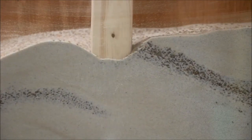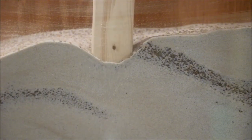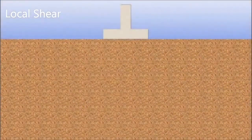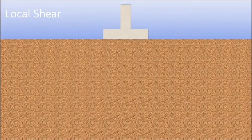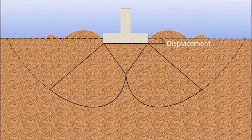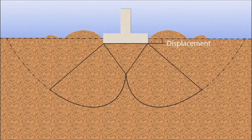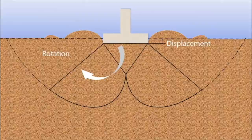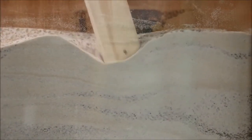Local shear failure occurs in cohesionless and loose to medium dense soils. This failure mode has a well-defined shear surface directly under the footing which may or may not be seen at the surface. Local shear failure happens gradually as the footing continues to experience settlement and the movement along the shear plane as you can see in the video.